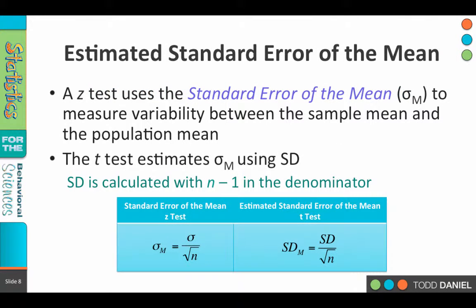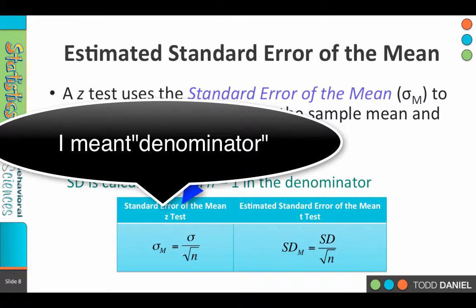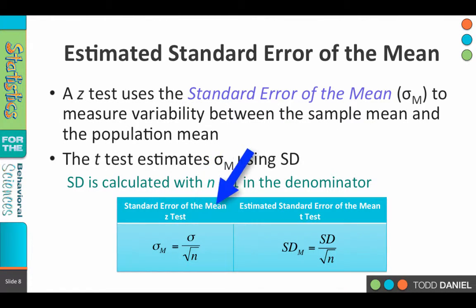While all of this estimation is something we need to understand better, you remember that when we used a z-test, we used the standard error of the mean in the denominator. It was a measure of variability between the sample mean and the population mean. Well, the t-test estimates the standard error of the mean using the standard deviation from your sample.